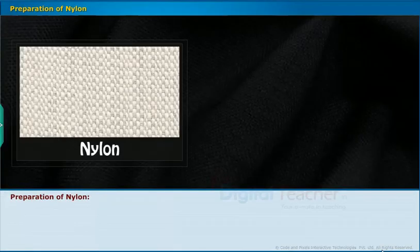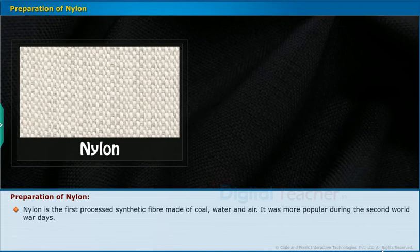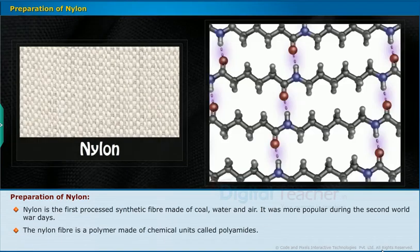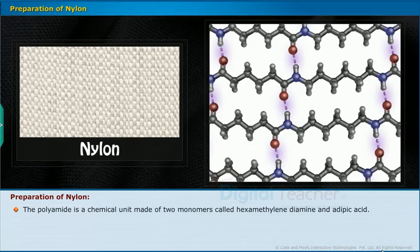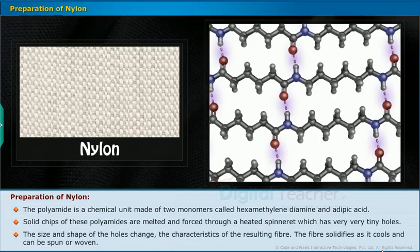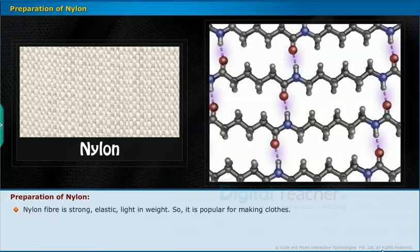Nylon is the first processed synthetic fiber made of coal, water and air. It was more popular during the Second World War days. The nylon fiber is a polymer made of chemical units called polyamides. The polyamide is made of two monomers called hexamethylenediamine and adipic acid. Solid chips of these polyamides are melted and forced through a heated spinneret which has very tiny holes. The size and shape of the holes change the characteristics of the resulting fiber. The fiber solidifies as it cools and can be spun or woven. Nylon fiber is strong, elastic and light in weight.